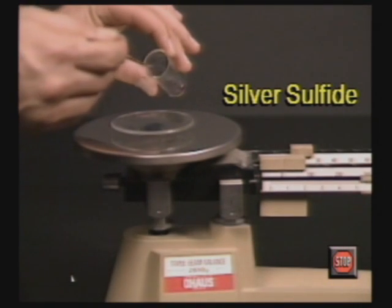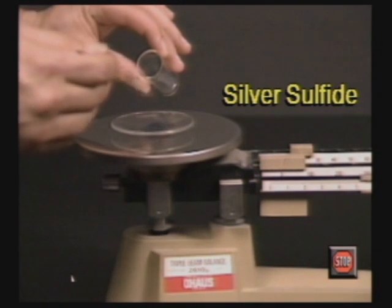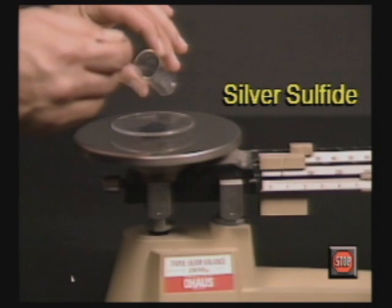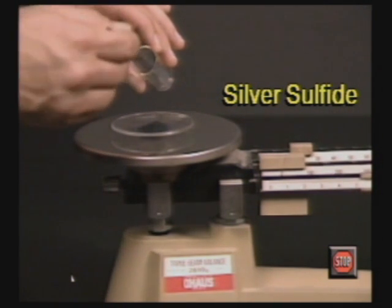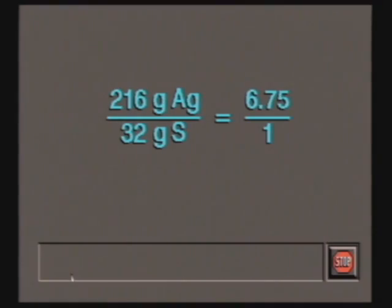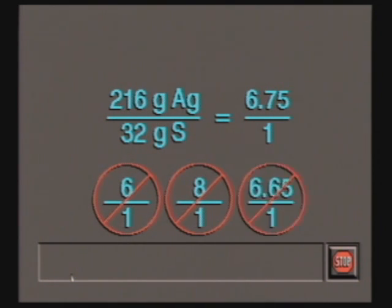Chemists had also discovered that elements combine in simple unchanging ratios. For instance, silver and sulfur always combine in a ratio by mass of 6.75 parts silver to one part sulfur to form silver sulfide. No matter where it was found or how it was formed, the elements in silver sulfide are always found in the same mass ratio of 6.75 to one. The ratio was never 6 to one, 8 to one, or even 6.65 to one.